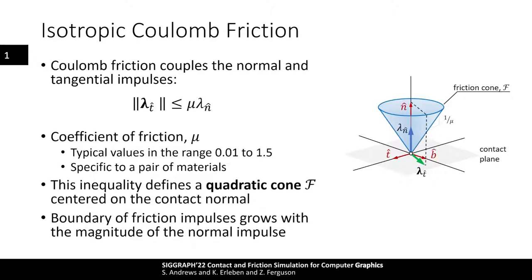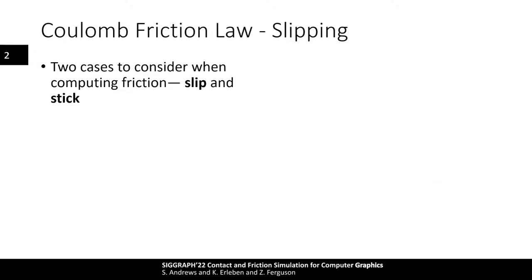For this part of the course, we assume the case of isotropic Coulomb friction, which simply means that the cross section of the cone is a circle and the friction forces behave similarly in all directions of the contact plane. Whereas for anisotropic friction, the shape will be an ellipse or some other complex shape. The role of friction is to resist relative tangential motion, and depending on the magnitude of friction forces and whether they are limited by Coulomb's law, objects will either be sliding or stationary — we consider two cases: stick and slip.